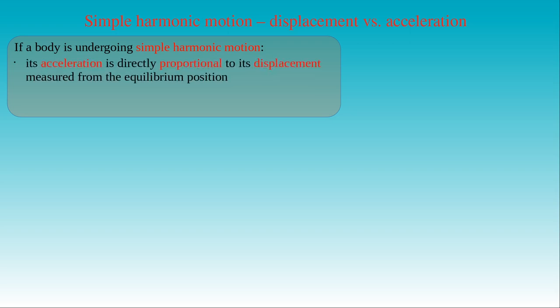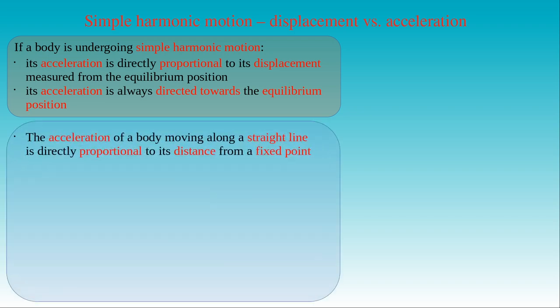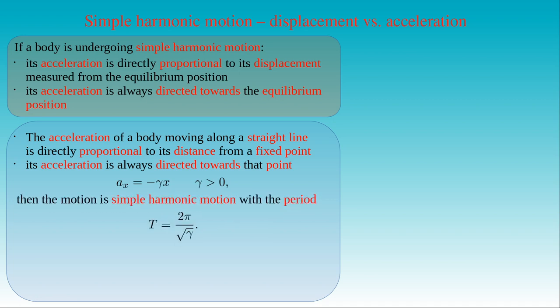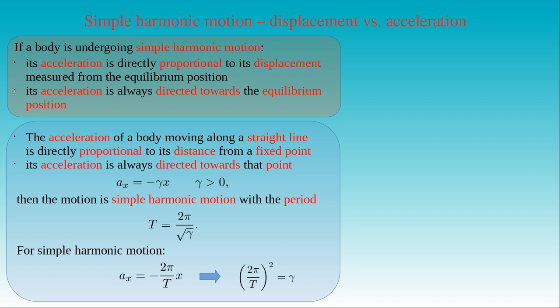Then we can conclude the following: if a body is undergoing simple harmonic motion, then the acceleration of the body is directly proportional to its displacement measured from the equilibrium position, and it is always directed towards the equilibrium position. The converse of the statement is also true: if the acceleration of a body moving along a straight line is directly proportional to the distance measured from a fixed point and always directed towards that point — that is, if the acceleration equals minus γ times the distance x from the fixed point, where γ is a positive constant — then the body is undergoing simple harmonic motion with period equal to 2π divided by the square root of γ. The period T can be determined by comparing the mathematical form, giving 2π over T squared equals γ, and solving for T yields 2π over the square root of γ.